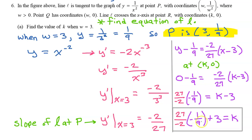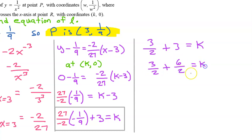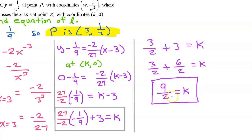This is an acceptable answer on a free response question, but let's simplify in case this were a multiple choice question. A negative times a negative is positive, and 9 goes into 27 three times. So we get 3/2 plus 3, which equals 3/2 plus 6/2, giving us k equals 9/2.